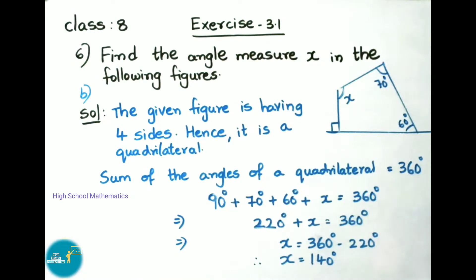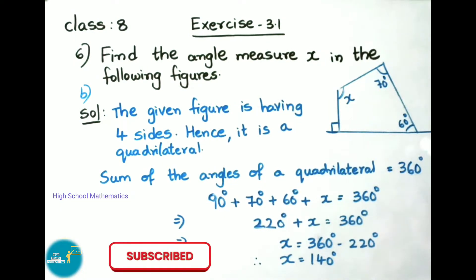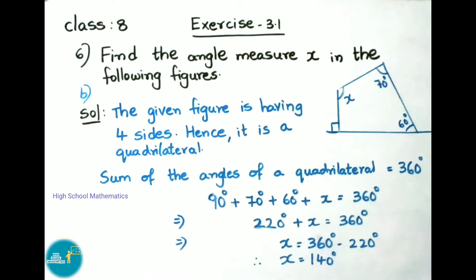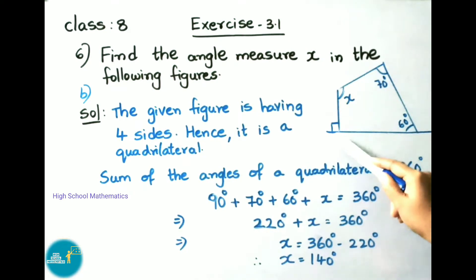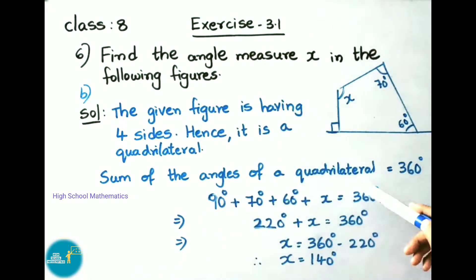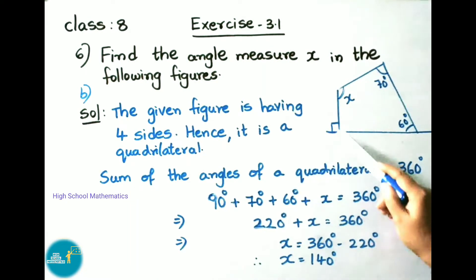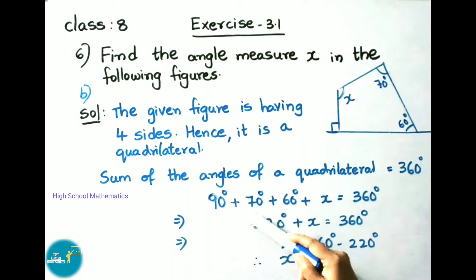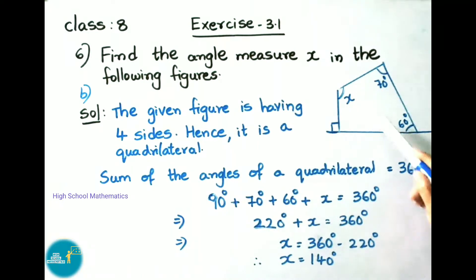See now sixth question B. The given figure has four sides, hence it is a quadrilateral. The angles given are 70 degrees, 60 degrees, x, and one right angle of 90 degrees. We know the sum of the angles of a quadrilateral is 360 degrees, so we shall add all four angles.